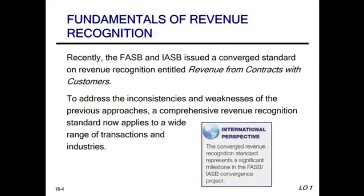Let's have an overview. Why did we have to learn about this new rule? Why did they change it? FASB and the IASB issued a converged standard on revenue recognition entitled 'Revenue from Contracts with Customers.' The new term to get familiar with is that you have to have some sort of a contract before you can recognize revenue. The reason for this converged standard is that FASB had too many standards for revenue recognition, so some transactions would have been revenue under FASB but not under IFRS, or revenue under IFRS but not under FASB.